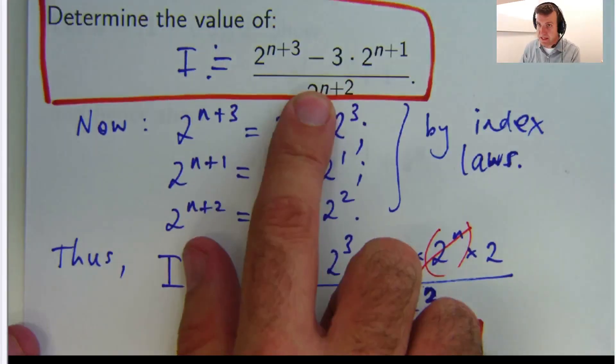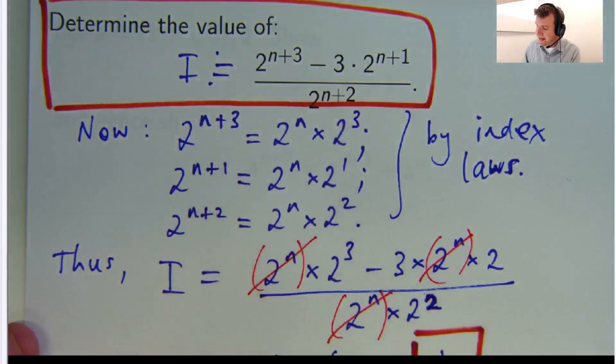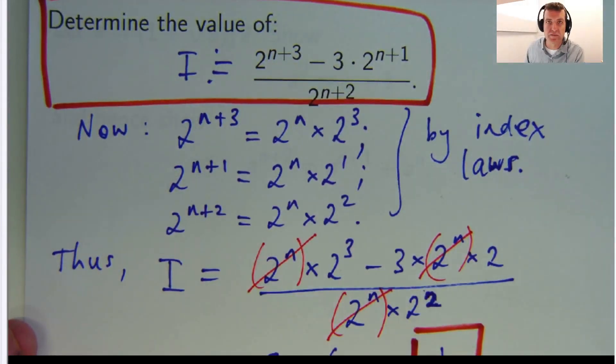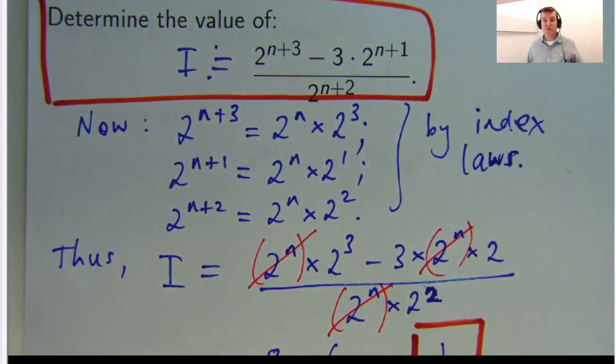All right, so that's how you would do a problem like this. Look, try to break it up into bits that will cancel off. Here we chose 2 to the n. Hope you enjoyed this video, everyone. Thanks for tuning in. See you soon. Bye.